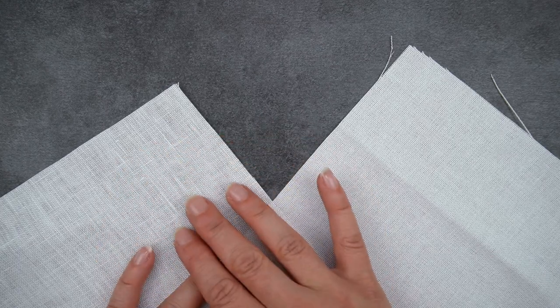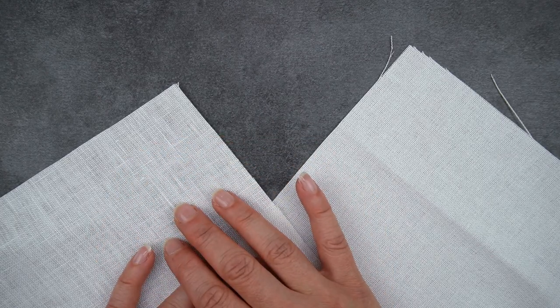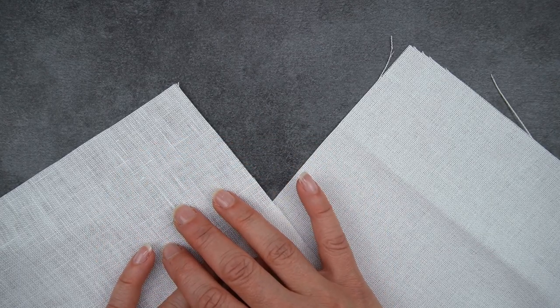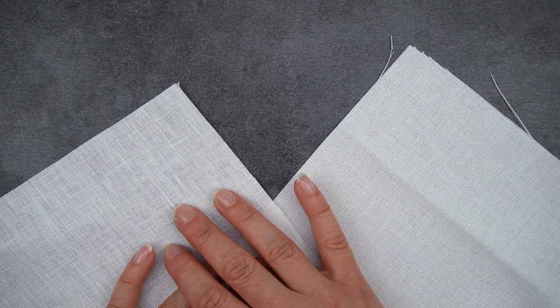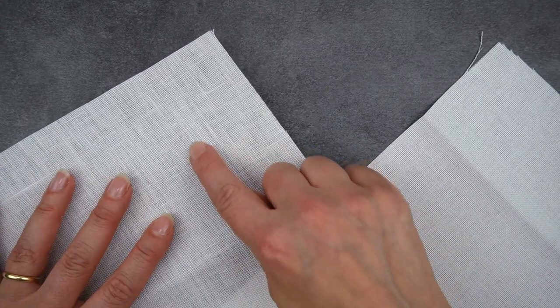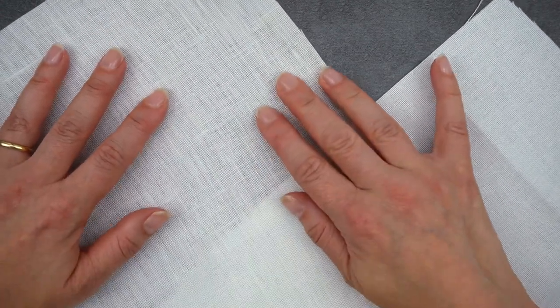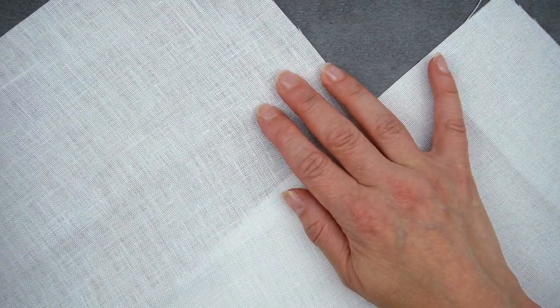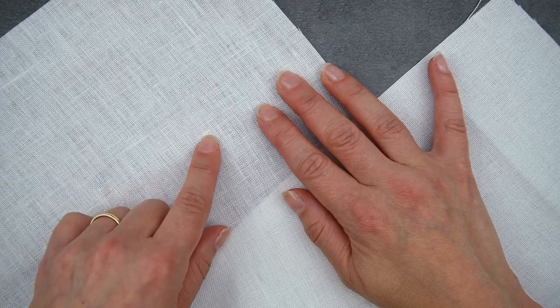Whereas linen is a natural material made from flax fibre so the thread thickness can vary, the spacing of threads may be irregular and there are often little slubs or bobbly bits. So you can see some slightly thicker threads here and there's actually a little slubby bit here.